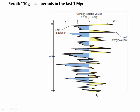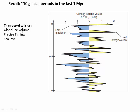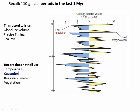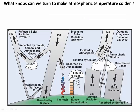Recall from the last video: in the last million years we've had roughly 10 glacial interglacial cycles. They happen about every 100,000 years, and what we know about these is they're big changes in ice volume and big changes in sea level. What we don't know in particular is what causes them, and that's what we're going to look at in this video.